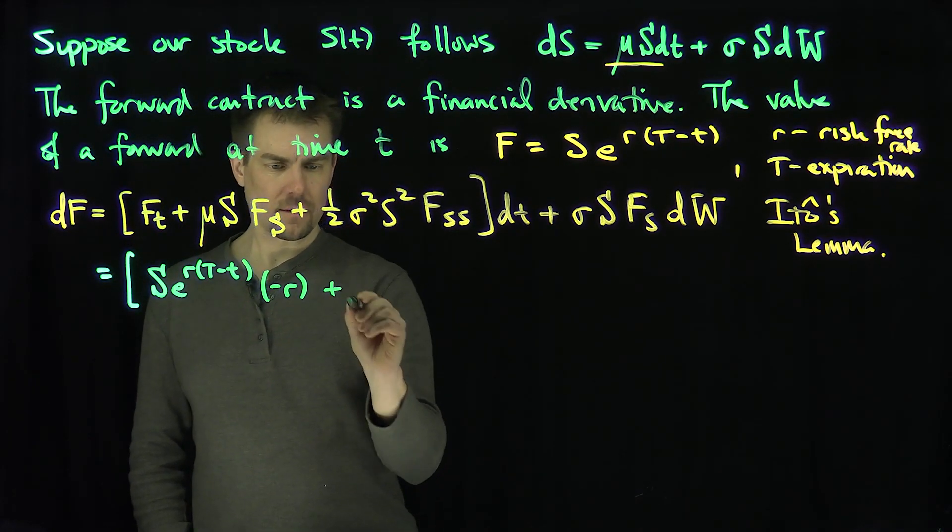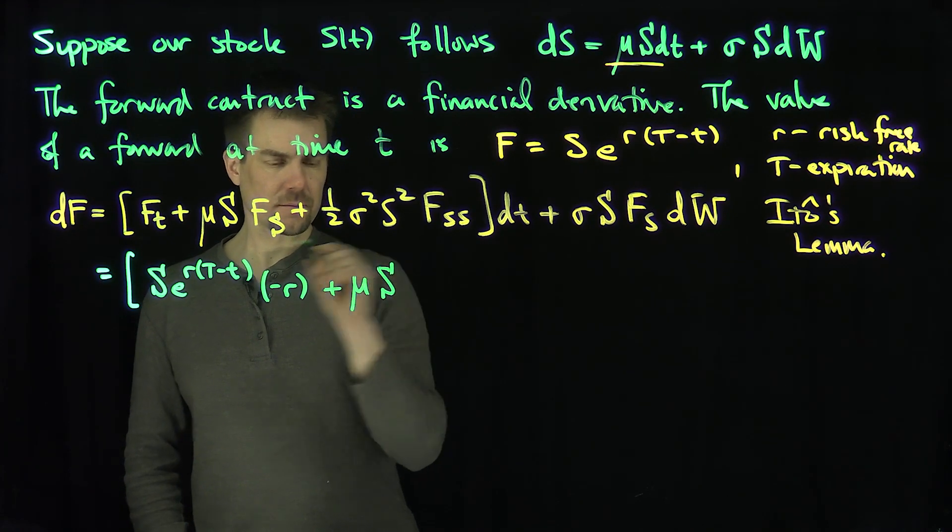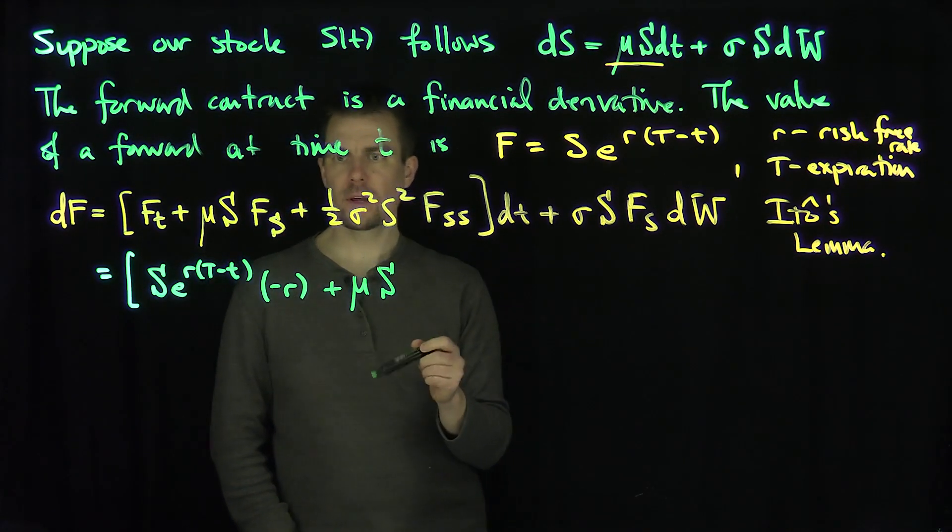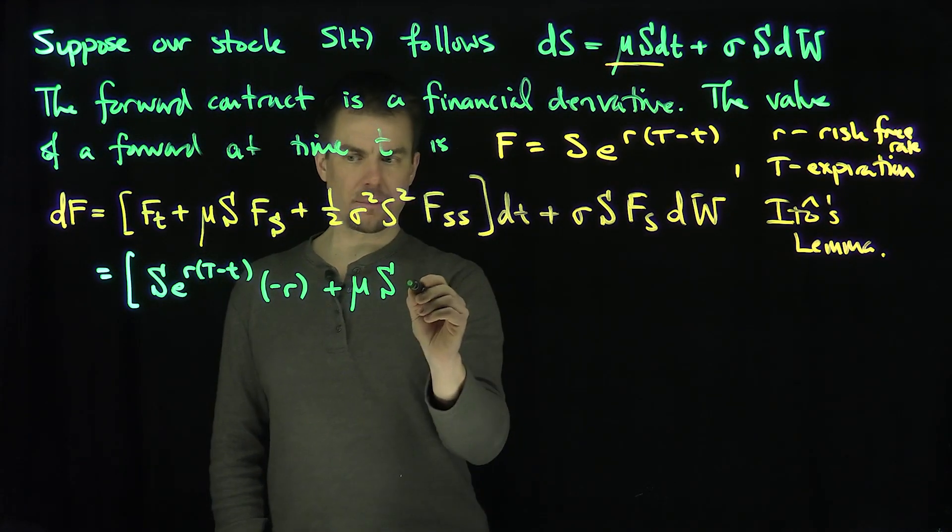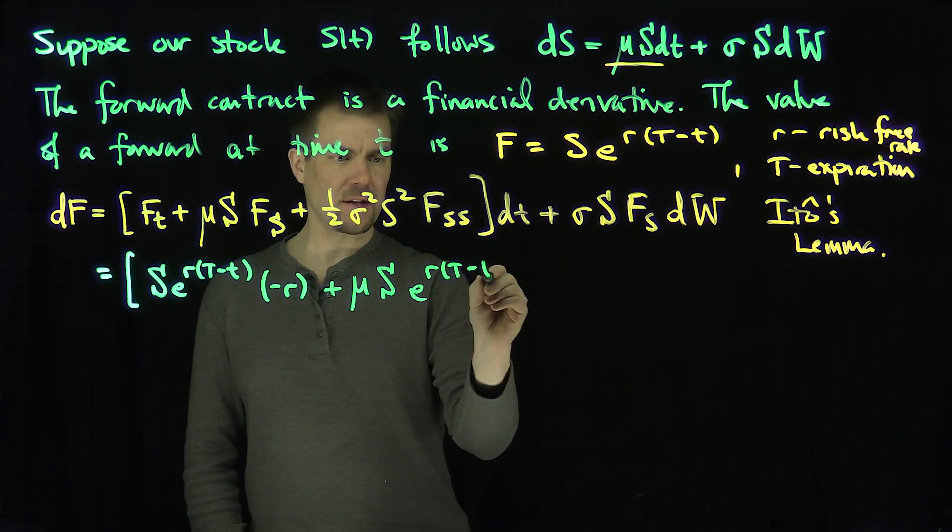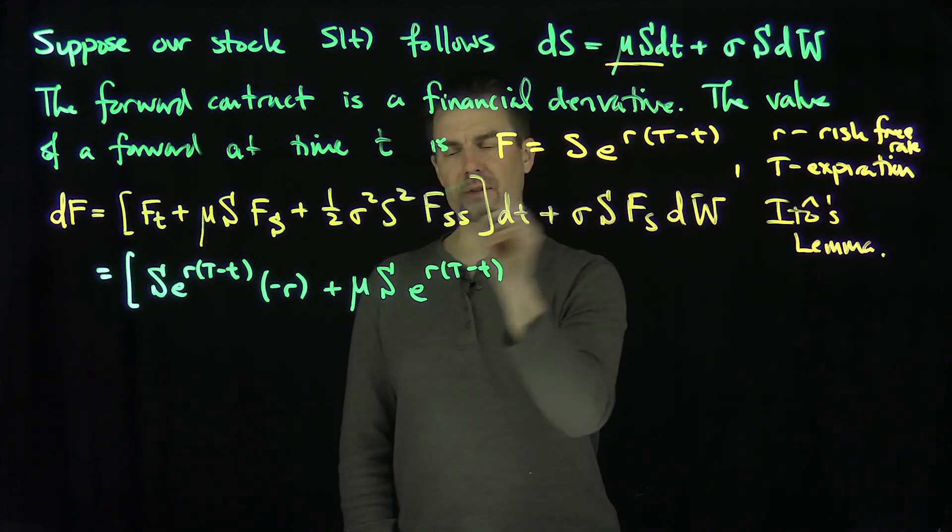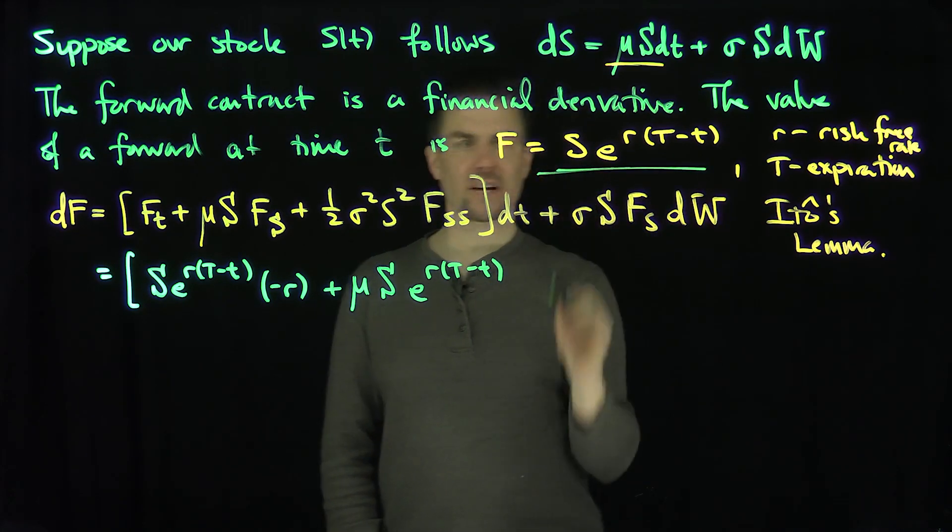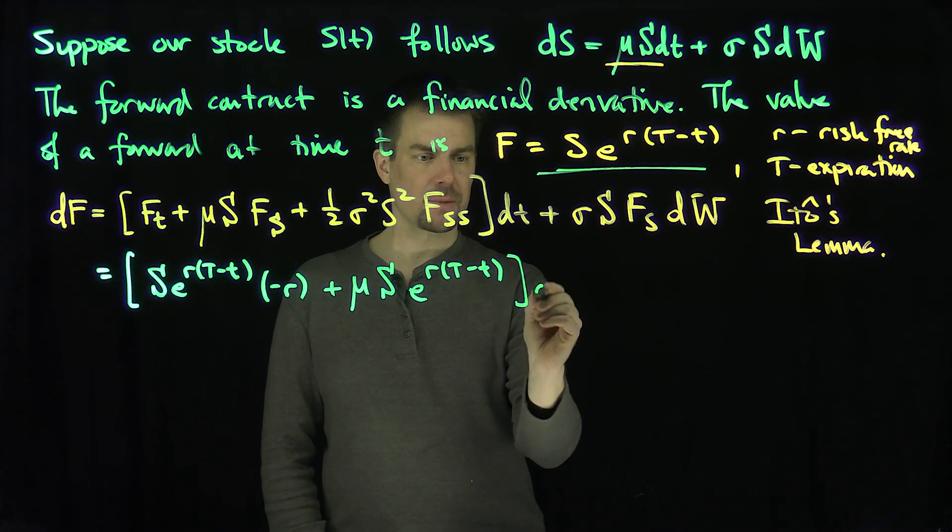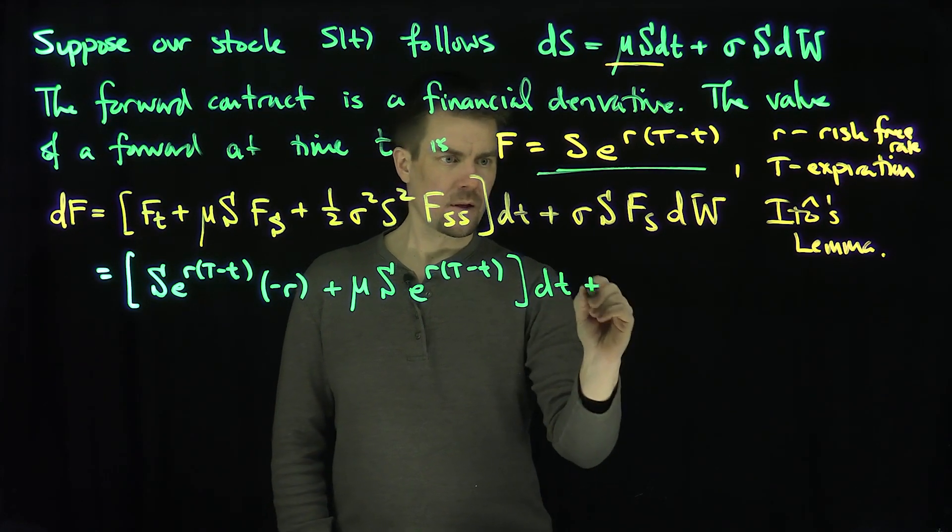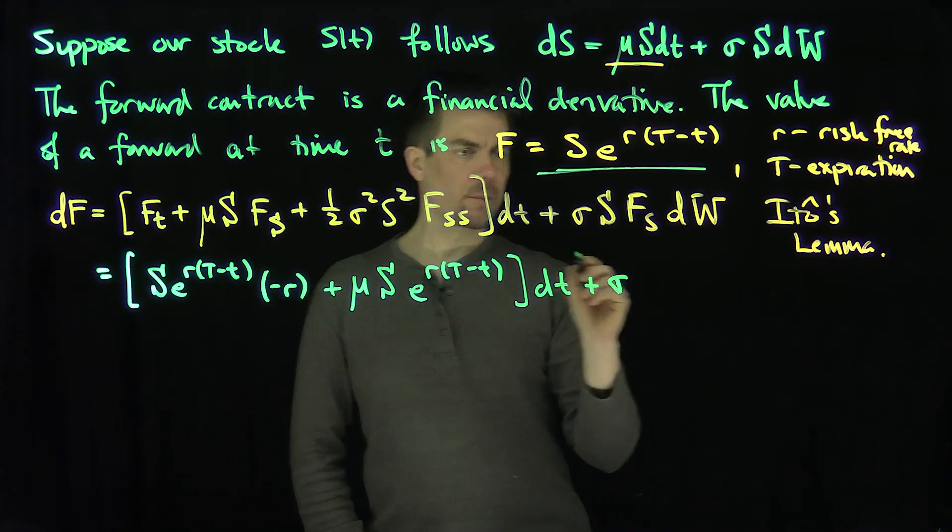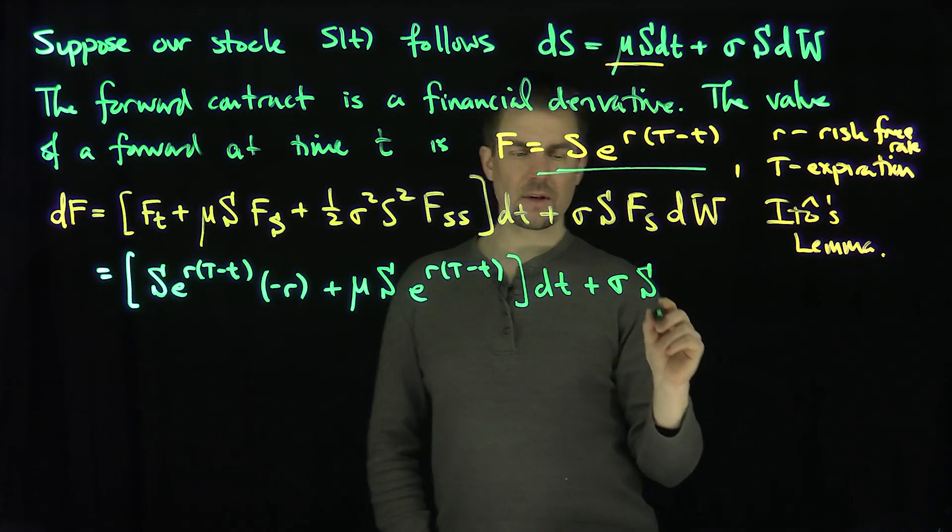Then I have μS, and what's F_s? F_s is just going to be e^(r(T-t)). There's no volatility over here. There's volatility for the stock, but there's no second derivative with respect to S. The second derivative of that is just nothing.